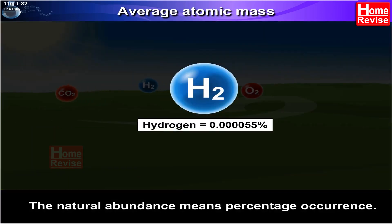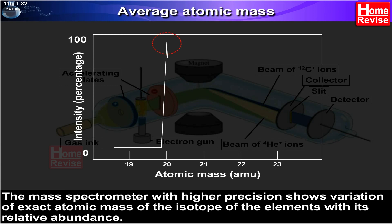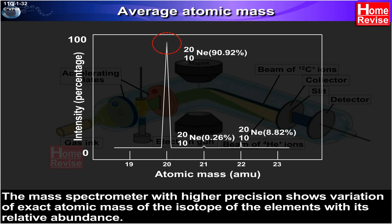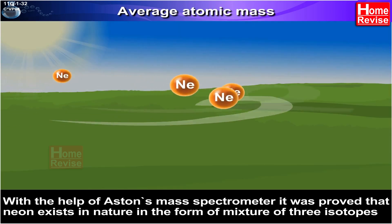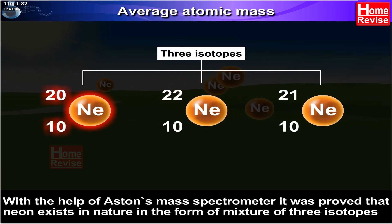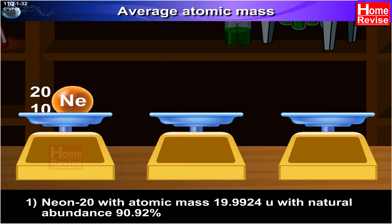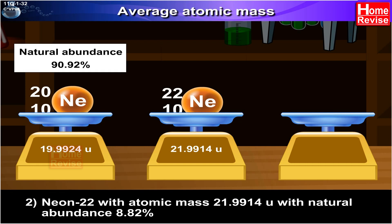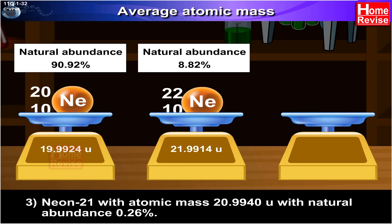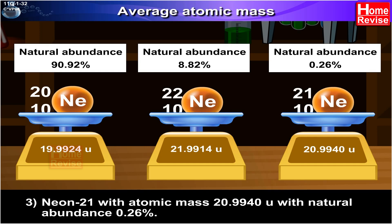The natural abundance means percentage occurrence. Using Aston's mass spectrometer, it was proved that neon exists in nature in the form of a mixture of three isotopes: Neon-20 with atomic mass 19.992 u and natural abundance 90.92%; Neon-22 with atomic mass 21.991 u and natural abundance 8.82%; and Neon-21 with atomic mass 20.994 u and natural abundance 0.26%.